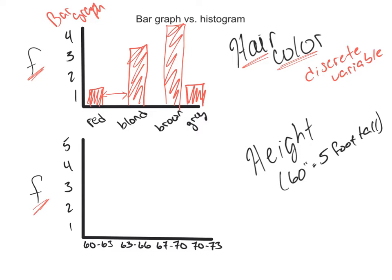So if I'm in a class of 20 people and I say, raise your hand — you can only pick one. If you self-identify with having red hair and only one person raises their hand, I put one down, then I go on to blonde and ask how many people have blonde hair. Maybe three people say, if I have to choose one category, I would say I have blonde hair.